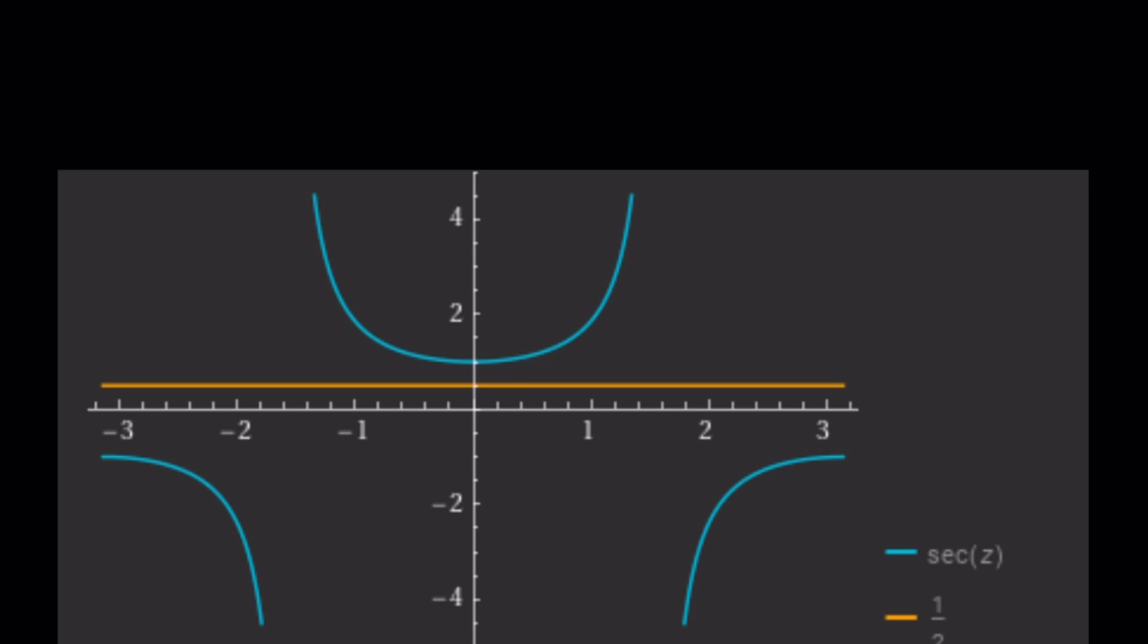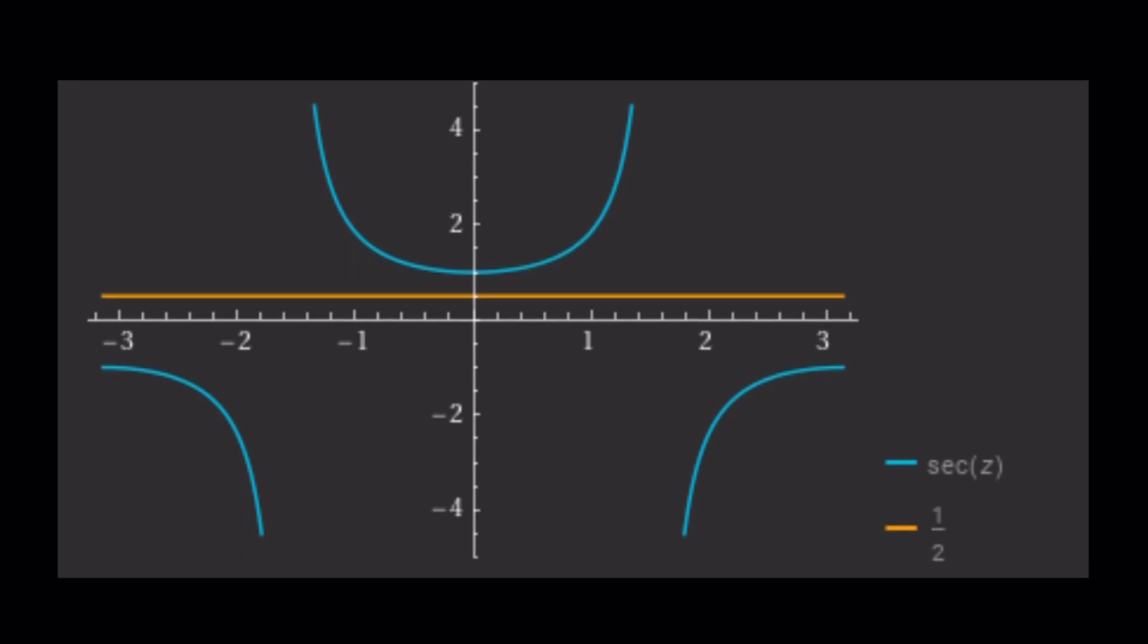So the blue one is the graph of secant, right? And remember, secant is the reciprocal of cosine, so it's kind of defined on a different interval. You have to think about the range of secant and range of cosine. And then one half is just the horizontal line, and they don't intersect. So no real solutions.